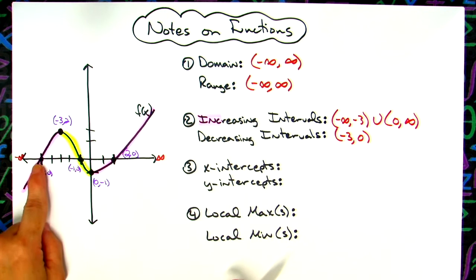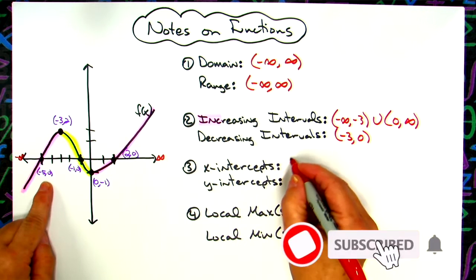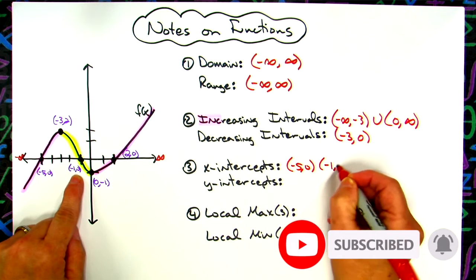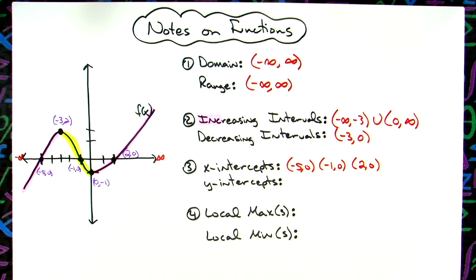X intercepts are the points at which the graph crosses the x-axis. So there are three of them. So negative 5, 0, negative 1, 0, and 2, 0. Written as ordered pairs because they are points on the graph where it crosses the x-axis.